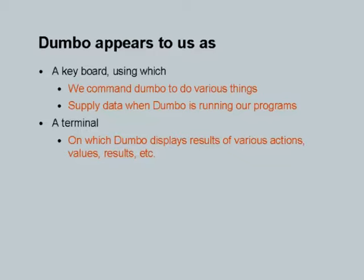Essentially our abstract model of a computer is that of a Dumbo who appears to us through two pieces of equipment: one is a keyboard, one is a monitor. That is what you see when you sit in the lab. The keyboard is what we use to command Dumbo to do various things and supply data when Dumbo is running our programs. The terminal is one on which Dumbo displays results of various actions and values.